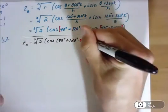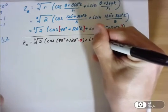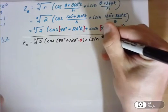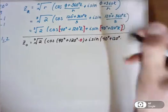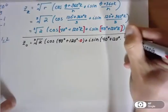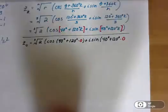Close that off, plus i sine of 40 degrees plus 120 degrees times 0, close it off.